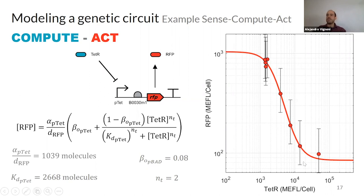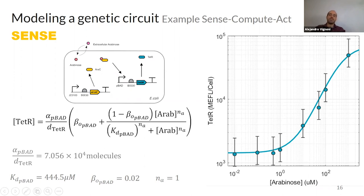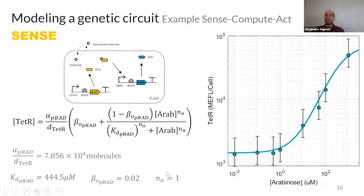For this fit, I constrained the Hill coefficient to be an integer, and we got a coefficient of 2, meaning theta dimerizes — which makes biological sense. In the previous fit for arabinose, literature says the Hill coefficient should be 2, but we got 1 with a good fit. This might reflect the circuit context affecting behavior, or it may need further investigation. It doesn't mean the model is unusable — it just means the number differs from what was previously reported, and that should be noted and considered.